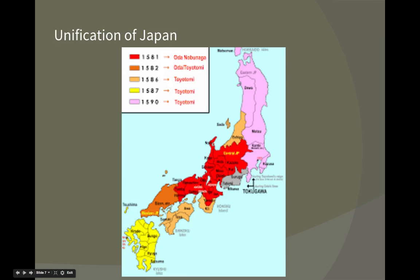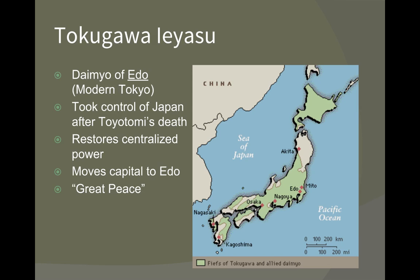After Hideyoshi dies, the next leader of Japan — and arguably the most important — is Tokugawa Ieyasu. He was one of the most important figures of the Tokugawa shogunate, so please be familiar with him. He was also a very powerful daimyo, and he ended up defeating all the remaining daimyos who were loyal to Hideyoshi. Basically he took over all the land that Hideyoshi had intended to give to his son — so it was effectively a takeover of power.